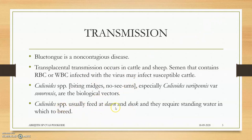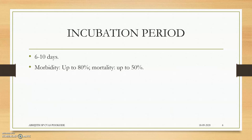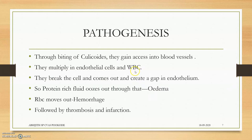Culicoides species usually feed at dawn and dusk and require standing water to breed. So sheep and goats should not be allowed to graze or browse at dawn and dusk so that they will not be bitten by Culicoides. The incubation period is 6 to 10 days. Morbidity is up to 80% and mortality is up to 50% — this is very important.